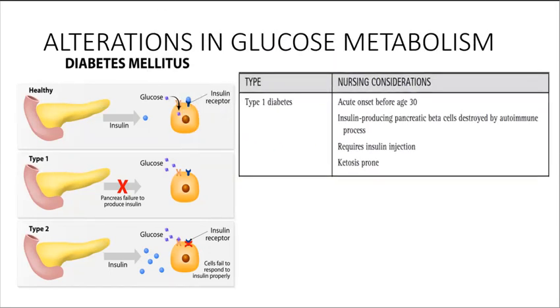Type 1 diabetes has an acute onset before the age of 30. Here, the insulin-producing pancreatic beta cells have been destroyed probably due to an autoimmune process, and as a result, the individual is not able to produce insulin.